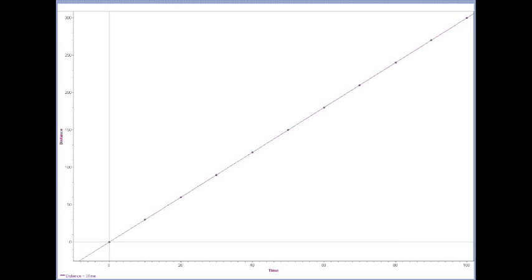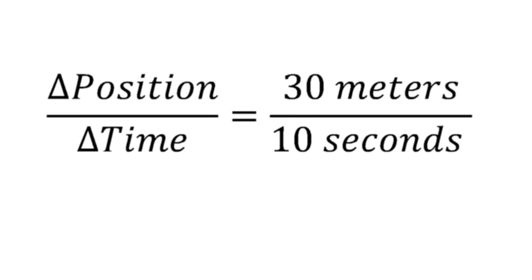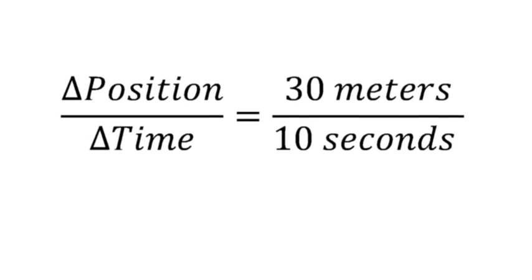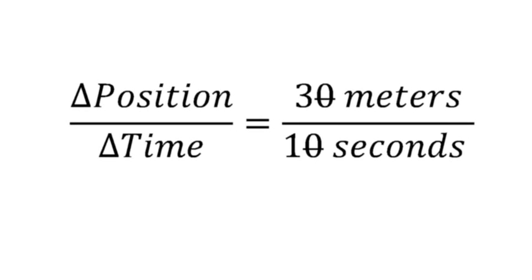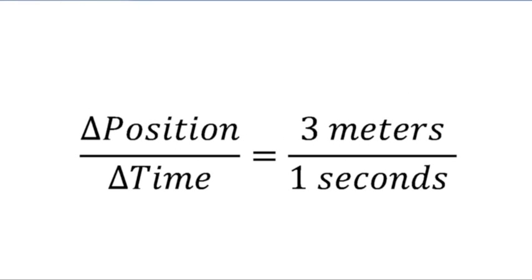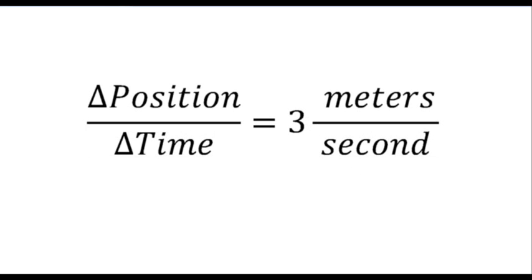...is their change in position divided by the change in time. The slope is equal to 30 meters per every 10 seconds. To simplify, the slope equals 3 meters per one second. This is the velocity of the person. Notice the straight line - the velocity is constant.